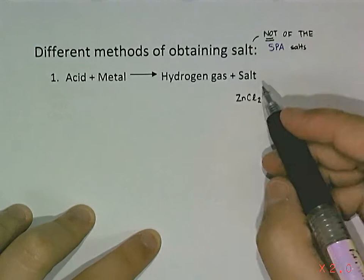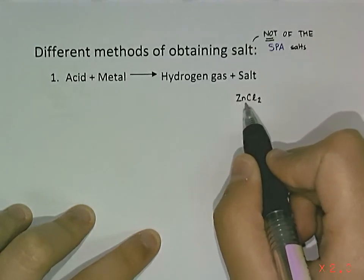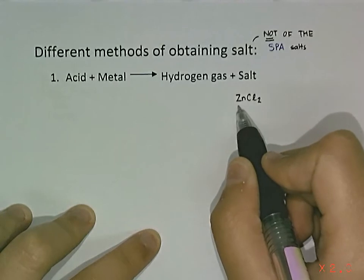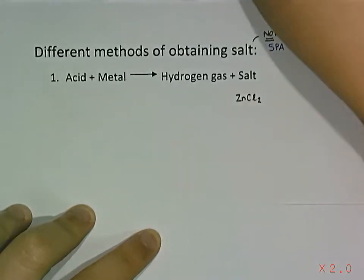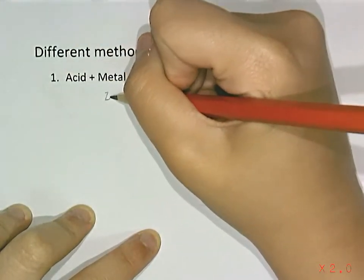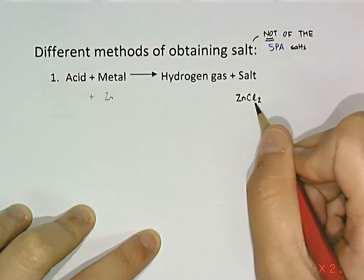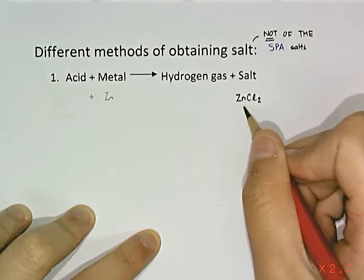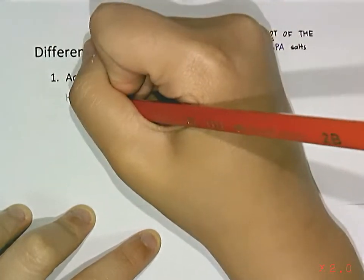First, we have to pick the metal that has the cation. What I have written down here is zinc, so the metal we are going to use will be zinc. Then the acid needs to have chloride, so the only acid that we can use is hydrochloric acid.